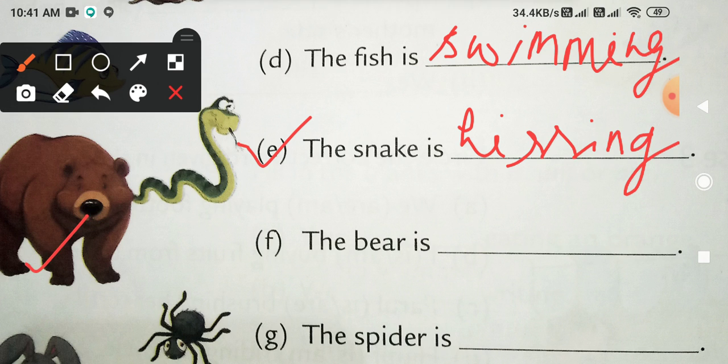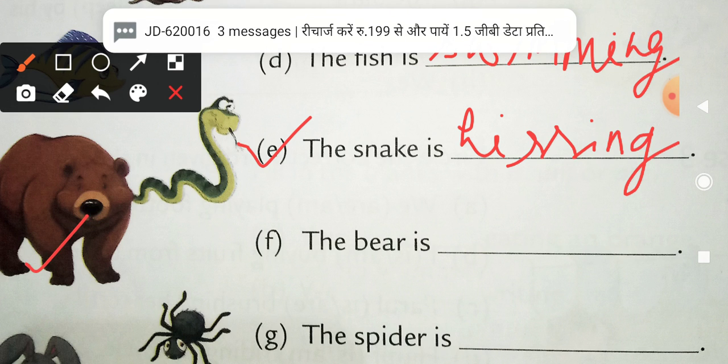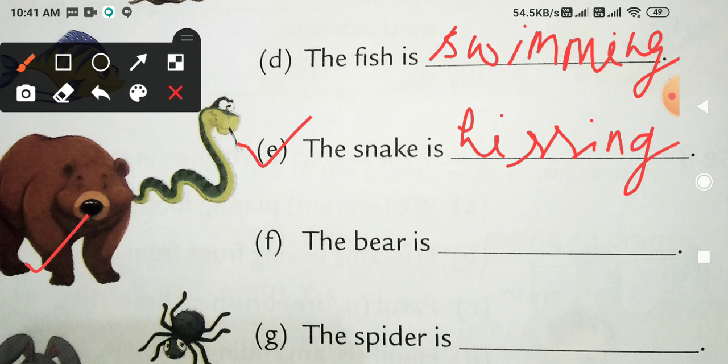Next, the bear is. Bear means bhaloo. Bhaloo, what do you do? Growl. Growl means gurana, garjana. So you will write growling, G-R-O-W-L-I-N-G, growling.